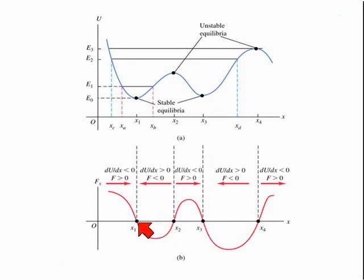Consider a point to the left of x1. The gradient of the potential energy function is negative, and therefore the force is positive. In other words, it's in the positive x direction, and so it is towards the point x1.